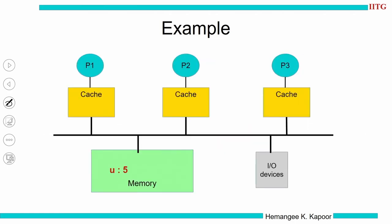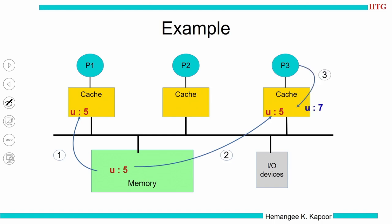Taking a similar example with variable u: p1 reads u, then p3 reads it. After reading u equal to 5, p3 modifies it to 7, so u becomes 7. Later p1 issues a read of u. This results in a cache hit and the value read will be 5. But in reality, the value of u is 7. The actual value is 7 but p1 is reading 5.